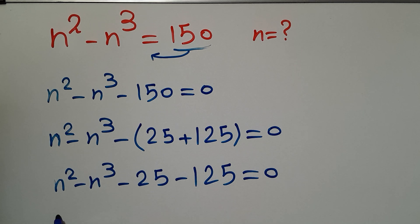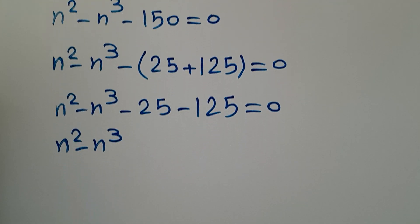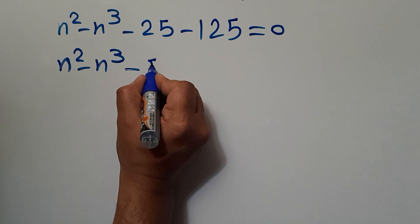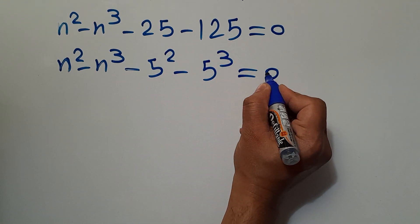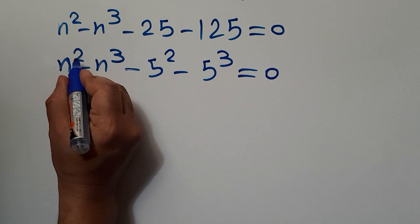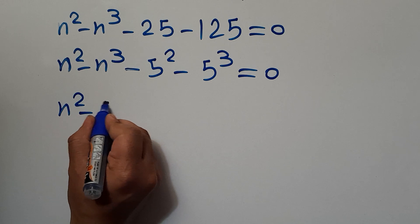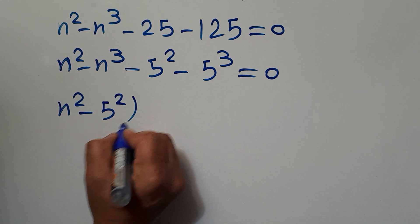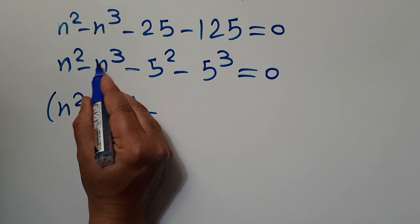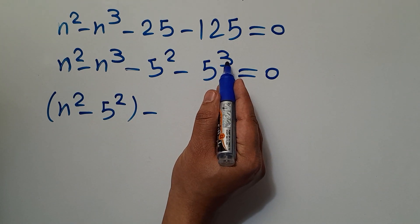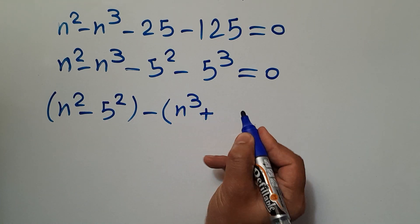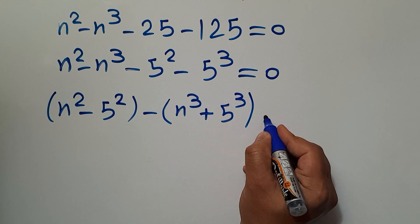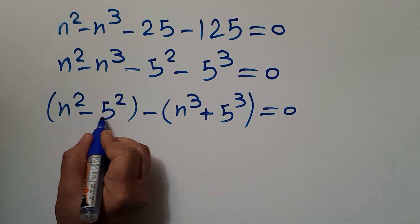Now 25 is 5 squared and 125 can be written as 5 cubed. So we have n squared minus n cubed minus 5 squared minus 5 cubed equals 0. Let's write minus 5 squared next to n squared: n squared minus 5 squared, and then negative bracket n cubed plus 5 cubed bracket equals 0.